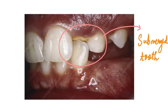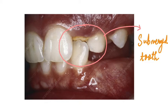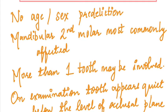This picture depicts an ankylosed deciduous lateral incisor. We can see that there is no coronal portion visible in the oral cavity — only a small yellowish calcified mass. Also note that the mandibular lateral incisor appears to be supra-erupted compared to the maxillary lateral incisor. In this case, because the deciduous lateral incisor was submerged or ankylosed, there was no eruption of the permanent lateral incisor.